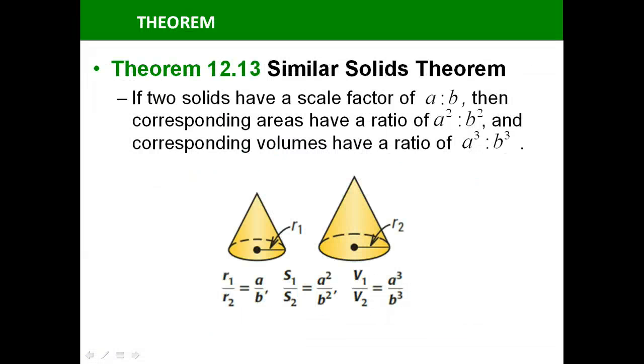Similar solids theorem. If two solids have a scale factor of a to b, then the corresponding areas ratio is a squared to b squared. And we studied that earlier when we were talking about similar planar figures or similar polygons. But it still holds true here. So if our radius is one to two, or a to b, then our surface area is going to be a squared to b squared. And our volume is going to be a cubed to b cubed. Because remember, what we're talking about when we're talking about volume is cubic inches. So we're going to have to cube that.